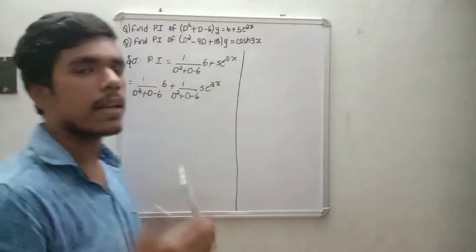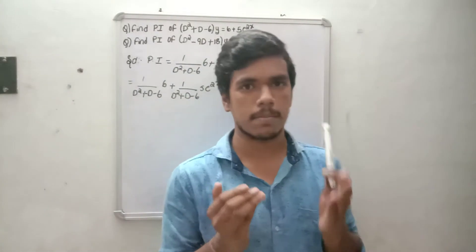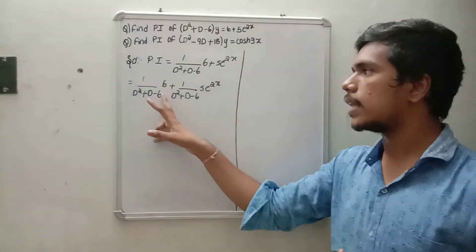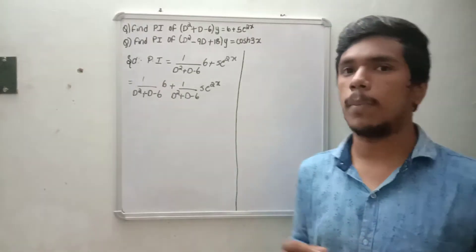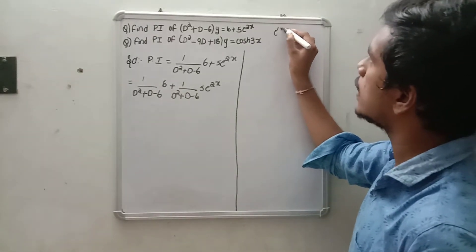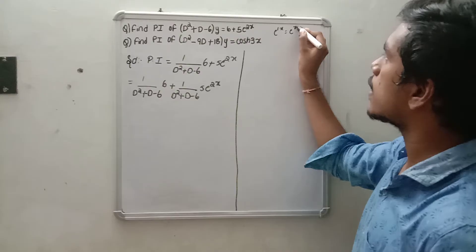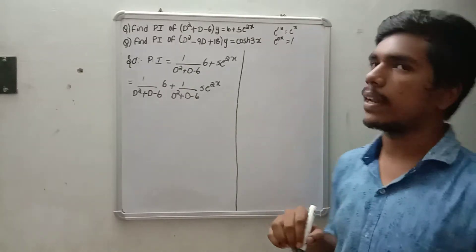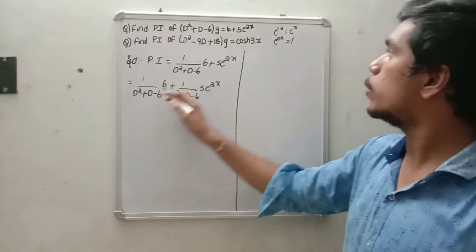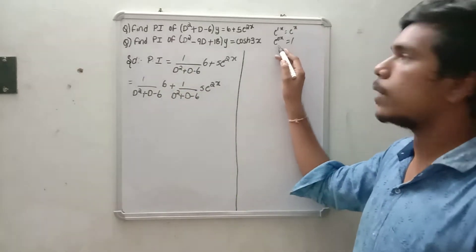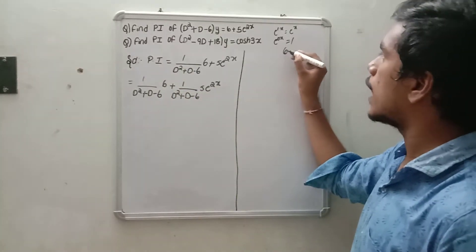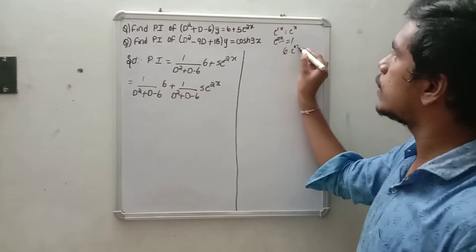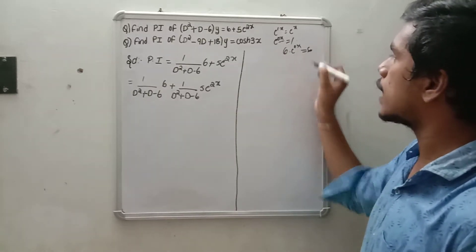Here the constant 6 can be written as 6 into e to the power 0x, because 6 times e to the power 0x is nothing but 6.